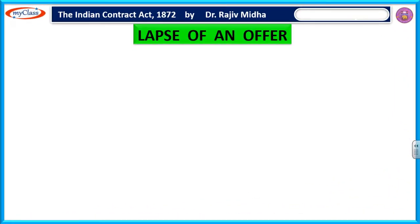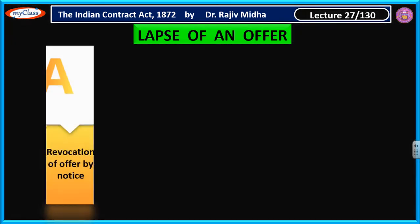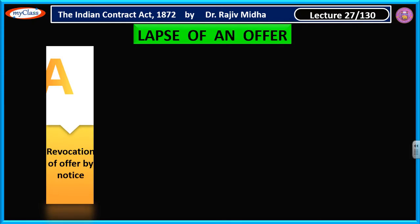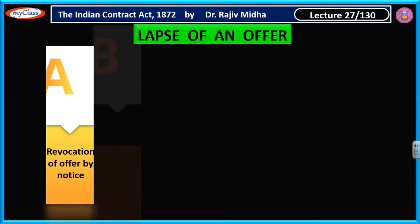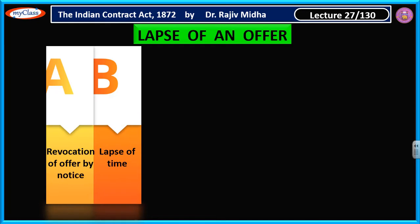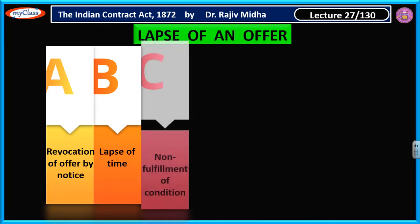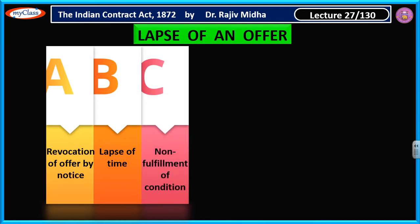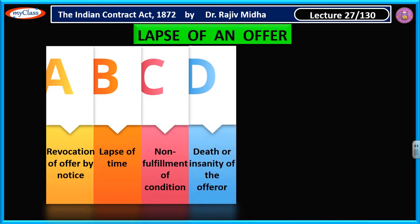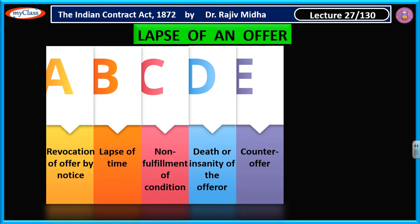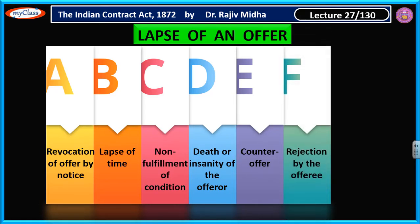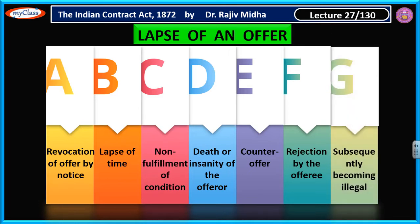Lapse of an offer. An offer may come to an end in a number of ways. The first way is by revocation of offer by notice. Second is lapse of time. The third one is non-fulfillment of condition. The fourth one is death or insanity of the offerer. The fifth one is counter offer. The sixth one is rejection by the offeree, and the last one is subsequently becoming illegal.